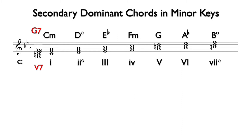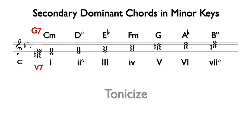Any major or minor chord in the key can be preceded by a secondary dominant that makes that chord temporarily feel like 1, or the tonic chord. The term for this is tonicize. A secondary dominant tonicizes a chord other than 1.